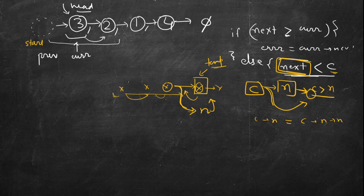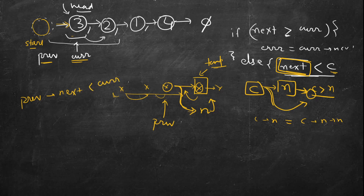We call it 'start' because that is the place where search will start. This is the dummy node — start — and its next is head. We initialize previous to start and current to head. We search after previous, and once we find the correct position, previous is at the right place. While previous's next is less than the node to be inserted, we keep incrementing previous. Once inserted, we reset previous back to start so that next time we search from the beginning.